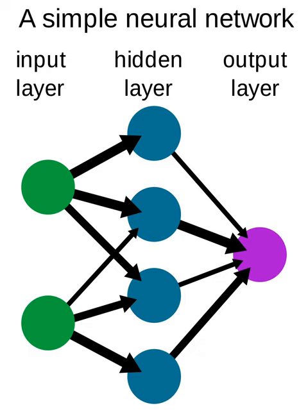Neural coding is concerned with how sensory and other information is represented in the brain by neurons. The main goal of studying neural coding is to characterize the relationship between the stimulus and the individual or ensemble neuronal responses, and the relationship among electrical activity of the neurons in the ensemble. It is thought that neurons can encode both digital and analog information.